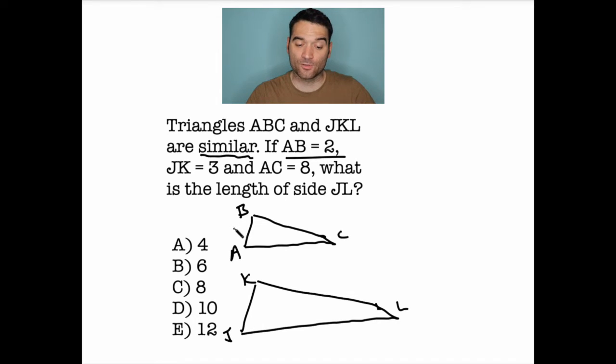So let's fill in the lengths that they've given us here. If AB equals 2, so that's 2 right there, JK equals 3, so that's right there, and AC equals 8, we want to know the length of side JL, that one.